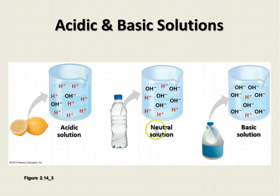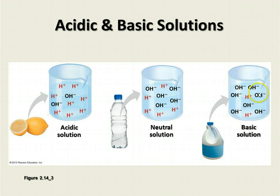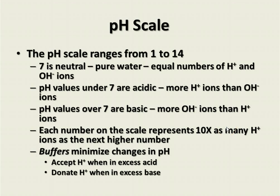Here we have three different solutions shown. A neutral solution has equal numbers of hydrogen ions and hydroxide ions. An acidic solution has more hydrogen ions than hydroxide ions, giving it a stronger concentration of hydrogen ions and a lower pH. A basic solution has more hydroxide ions than hydrogen ions, giving it a higher pH. The pH scale ranges from 1 to 14. Seven is neutral — that's distilled water with equal numbers of hydrogen and hydroxide ions. Values under 7 are acidic and values over 7 are basic.